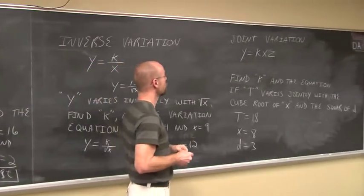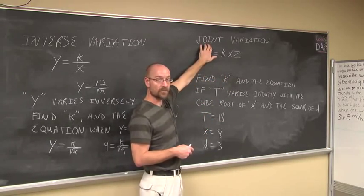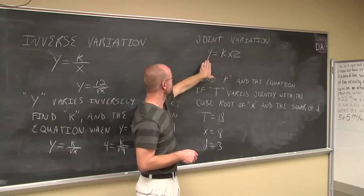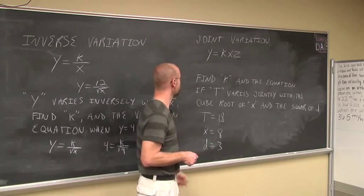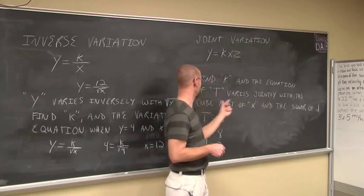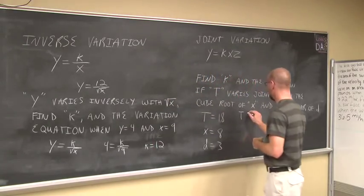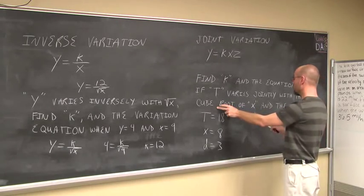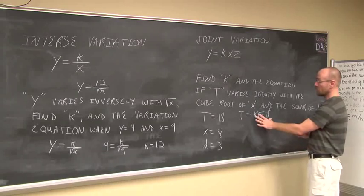Let's look at another type of variation called joint variation. Joint variation says there's more than one variable — it's very similar to direct, except there's more than one variable. Jointly means we're going to join more variables. So 'Y varies jointly as X and Z' involves two variables, X and Z. For example: find K and the equation if T varies jointly with the cube root of X and the square of D. Translating: T equals K times the cube root of X times D squared.